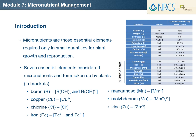Micronutrients are those essential elements required in very small quantities for plant growth and reproduction. The quantity needed varies with each plant species and with each specific element. Seven essential elements are considered micronutrients and include boron, copper, chlorine, iron, manganese, molybdenum, and zinc. These nutrients are absorbed by plants in the forms shown in brackets.